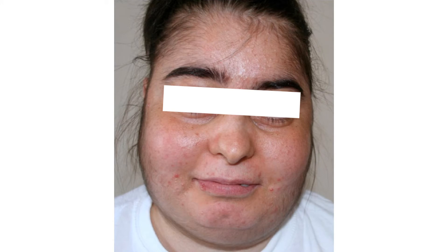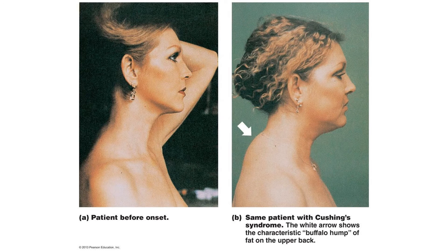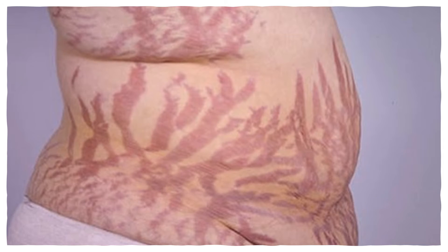I think it's really important to be able to visualise some of these signs. Here's an example of moon face, which is this really characteristic rounded appearance of the face due to fat deposits either side. This is what a buffalo hump looks like in Cushing's — this is also due to fat accumulation. I really like this image because it shows clearly what this patient looked like before Cushing's had onset and after, with this really characteristic buffalo hump. And then lastly, these are the purple striae you may notice on the abdomen.